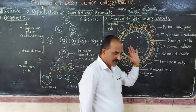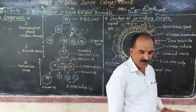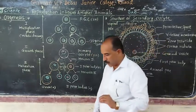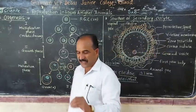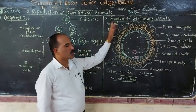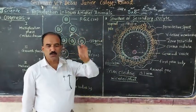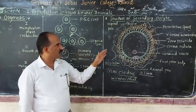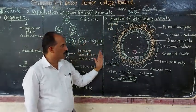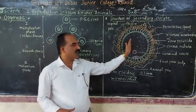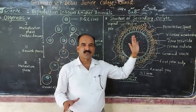In the case of humans, the unfertilized egg released from the ovary is called the secondary oocyte.